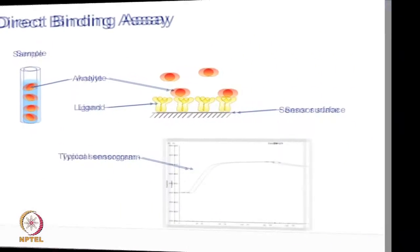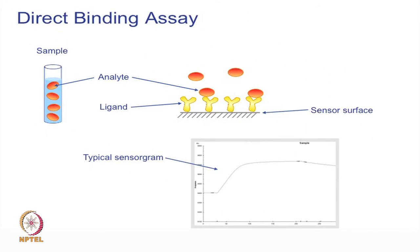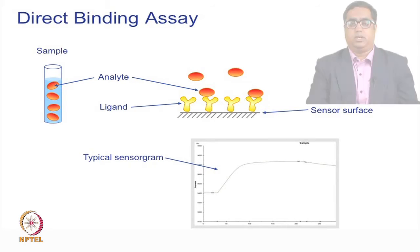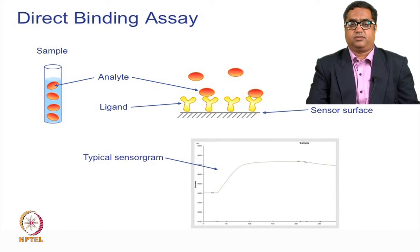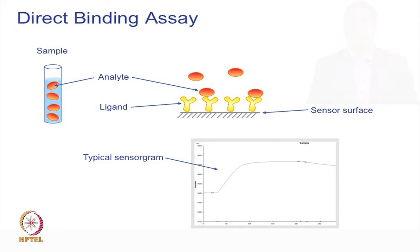In a direct binding assay, you have the ligand immobilized on the sensor chip, and an analyte present in your sample is passed over the surface and the interaction is recorded. As you can see on the screen, this shows a very simple binding and a regeneration.